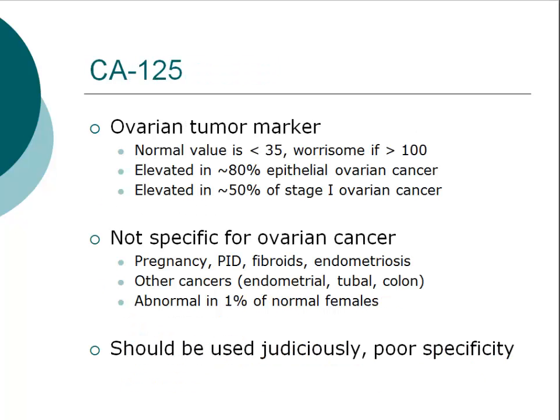The tumor marker CA-125 should be obtained in any postmenopausal woman with an adnexal mass. CA-125 is less helpful in premenopausal women because it can be elevated with pregnancy, pelvic infection, endometriosis, and other benign causes. In a postmenopausal woman, greater than 35 is elevated and greater than 100 is very worrisome. CA-125 is not a good screening tool for early ovarian cancer, however, because it is elevated in only 50% of early-stage cancer.